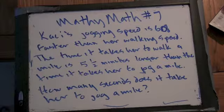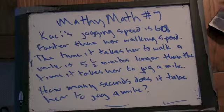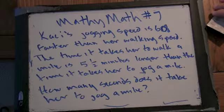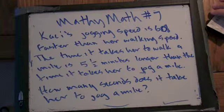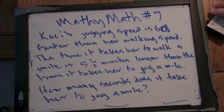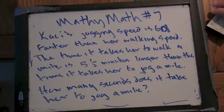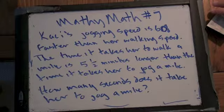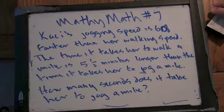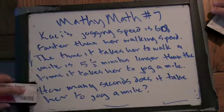So the time it takes her to walk a mile is 5.5 minutes longer than it takes her to jog a mile. Does that make sense? Mm-hmm. She walks slower than she runs. And you have to figure out how many seconds does it take her to jog a mile.